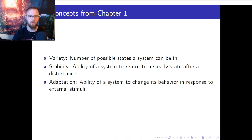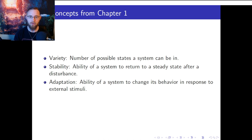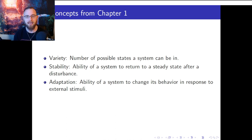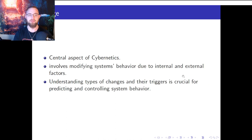Now let's look at the key concepts. First, we have variety — the number of possible states a system can be in. Understanding variety is important in order to predict or control a system's behavior. Second, stability: a system is stable if it can return to a steady state after being disturbed. Stability helps us understand how systems maintain equilibrium. Third, adaptation: the ability of a system to change its behavior in response to external stimuli. Cybernetics seeks to understand how systems adapt in order to maintain stability.